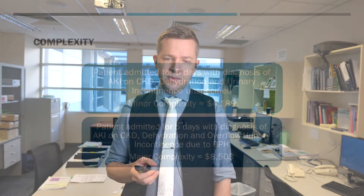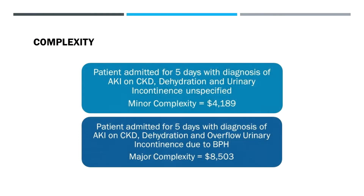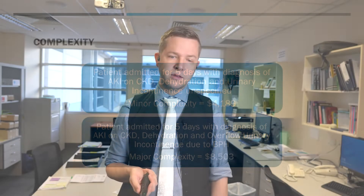Here's another one: a patient admitted for five days with a diagnosis of AKI on a background of CKD, dehydration, and urinary incontinence — without the subtype documented. Very simply, if we put 'overflow urinary incontinence due to BPH,' the complexity increases significantly to $8,500.